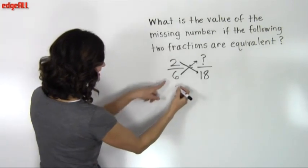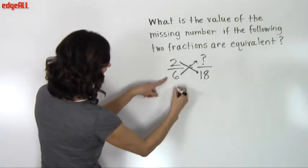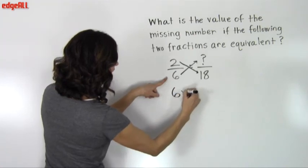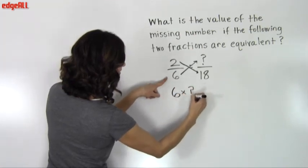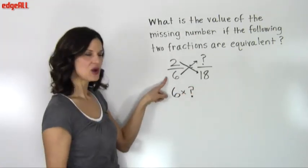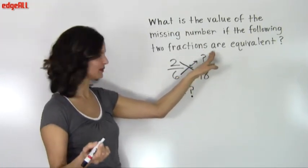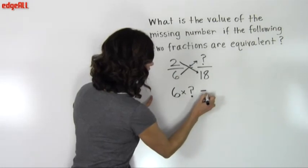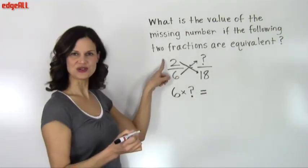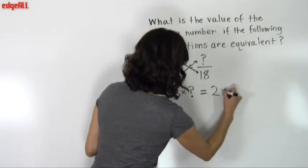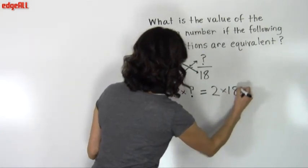So we can say that 6 times this unknown number, we'll leave it as a question mark. We know that 6 times this unknown number has to be equal to 2 times 18. So I can write 2 times 18 here.